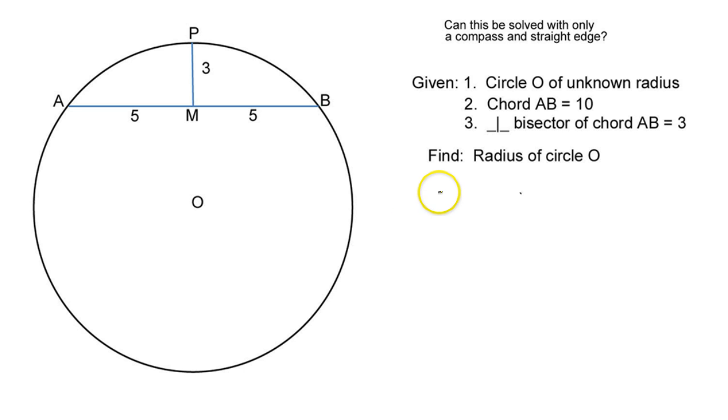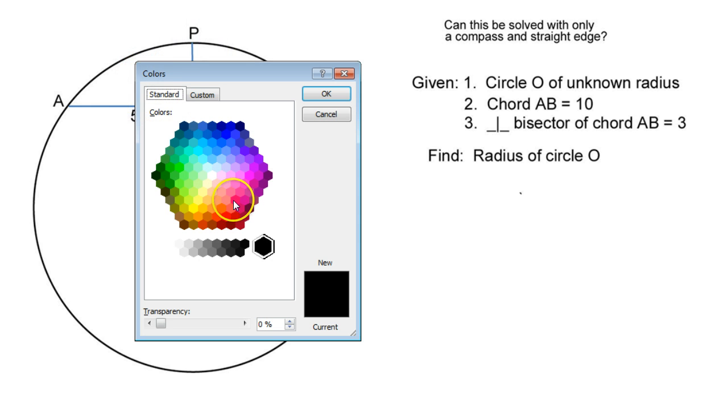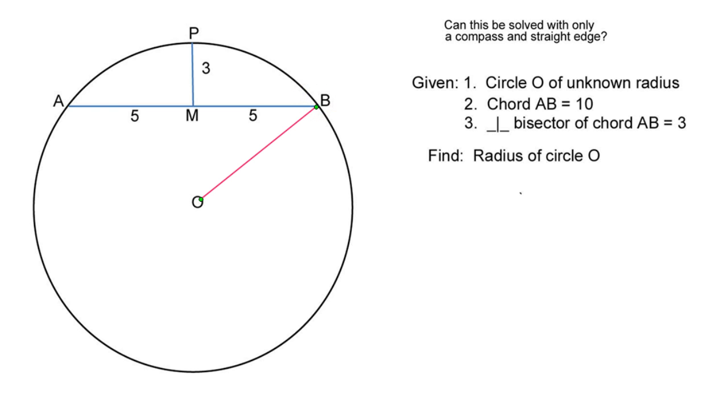Alright, so the way we would solve this algebraically is we're looking for the radius. So that means we're looking for this guy right here. I think I'm going to make it pink. Alright, so we're looking for that. Let's just go ahead and call it R.